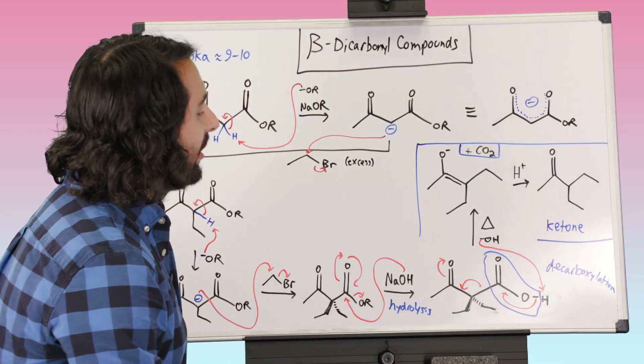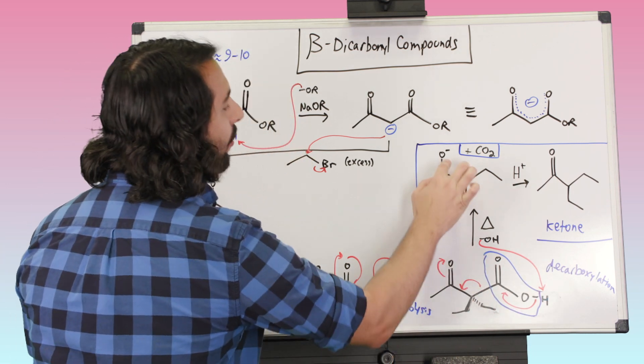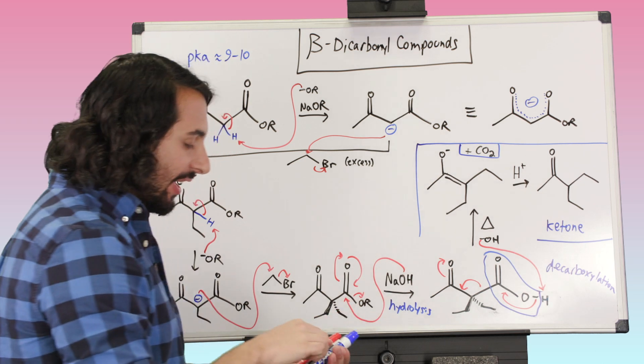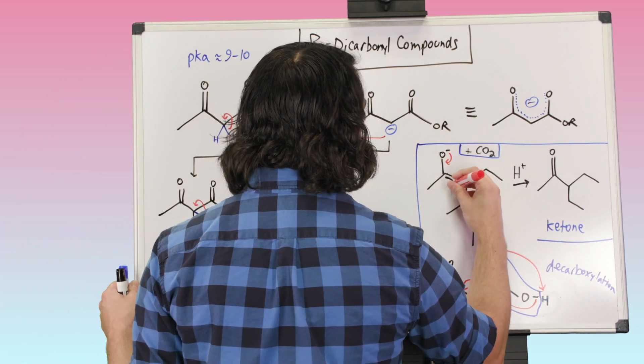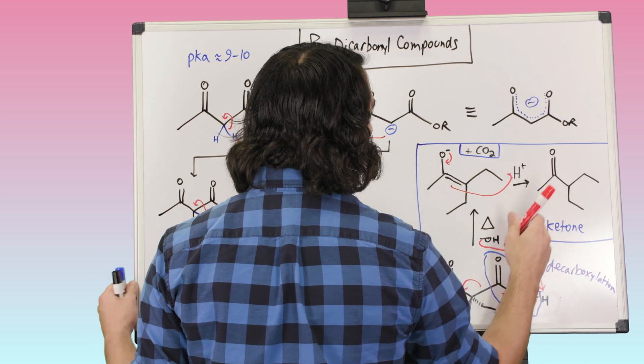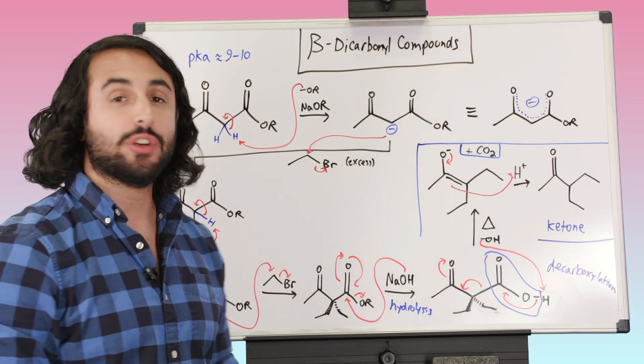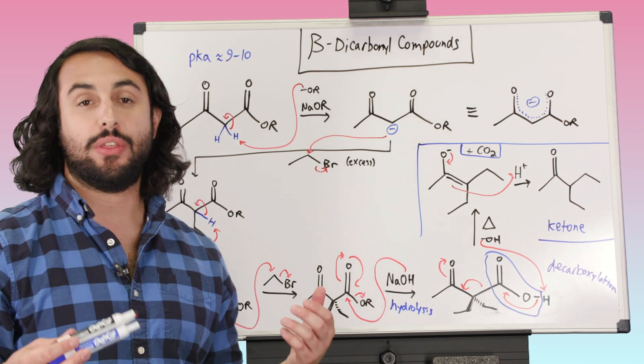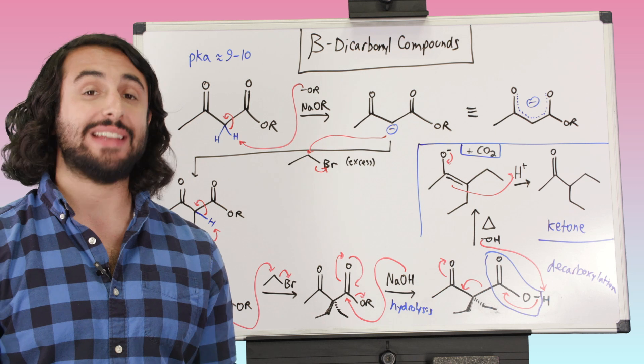Long word there. So this is the decarboxylation step. This sigma bond is going to flip over here and we're going to make that enolate. And then we can just do some acidic workup and we're going to get our ketone product. Okay, so these are some things that we can do with beta-dicarbonyl compounds, which once again are the products of Claisen condensation.